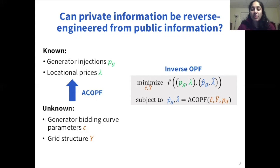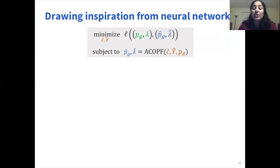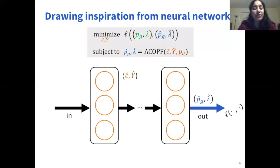We call this problem inverse optimal power flow, or inverse OPF. As many people who work in optimization can attest, writing down an optimization problem is the easy part — solving it is the hard part. To solve this particular problem, we use a technique called gradient descent that is used to optimize neural networks. For those familiar with neural network terminology, we basically view the outputs of ACOPF like the outputs of a neural network, and the inputs to ACOPF like the parameters of a neural network, and we optimize these parameters using gradient descent.